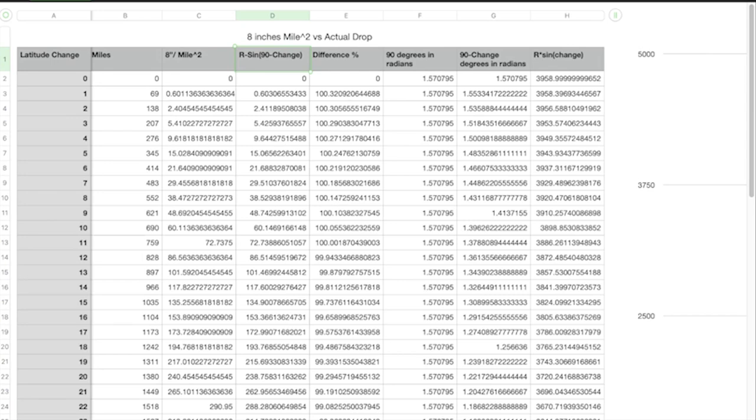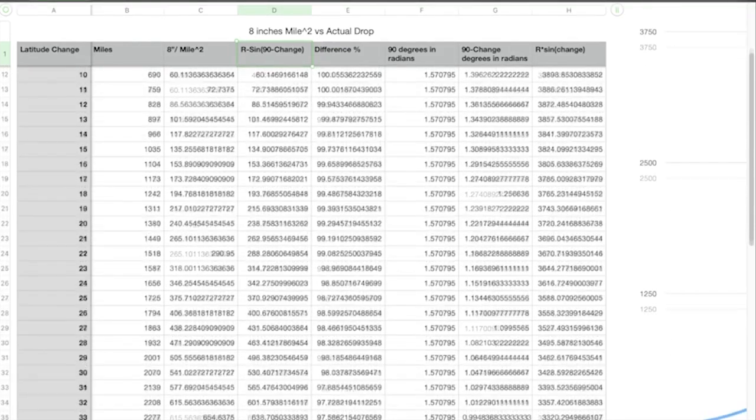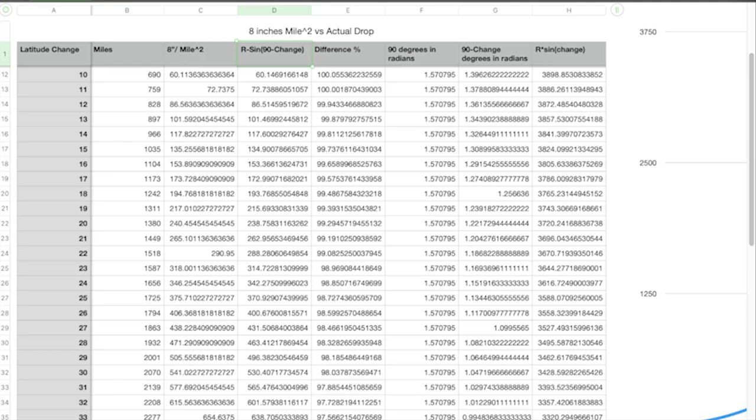Let's look at 5 degrees, which is 345 miles. According to 8 inches per mile squared, we should have a drop of 15.0284 miles. The actual drop is 15.0656 miles. So again, a fraction of a mile off here. Well, what if we go out further? Let's go out to 10. That would be 60.1136 miles versus 60.1469 miles. Again, just a fraction of a percent.